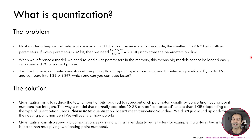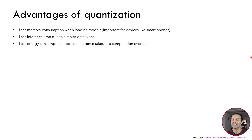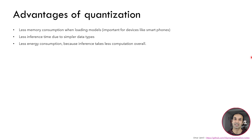For example, the computer is much faster at multiplying matrices made up of integers than two matrices made up of floating point numbers, and later we will see how this matrix multiplication works at the GPU level also. So what is the advantage of quantization? First of all we have less memory consumption when loading models, so the model can be compressed into a much smaller size, and we have less inference time because of using simpler data types, so for example integers instead of floating point numbers.